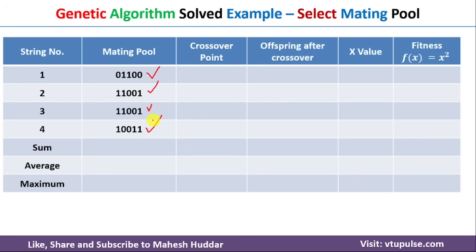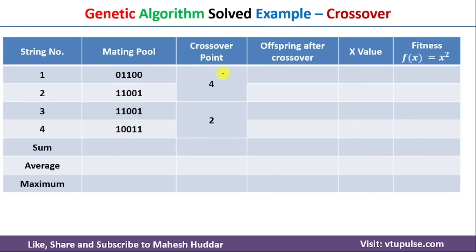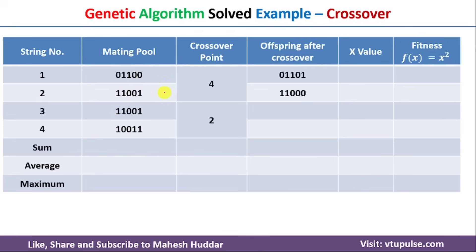We now apply crossover to the mating pool to generate offspring. The crossover point is selected randomly — I have selected point 4 for the first pair and point 2 for the second pair. For the first pair, bits after position 4 are exchanged, giving offspring 01101 and 11000. The crossover point of 4 means the first four bits stay the same and the remaining bits are swapped.